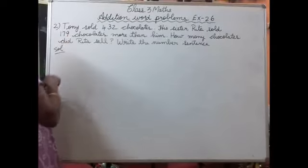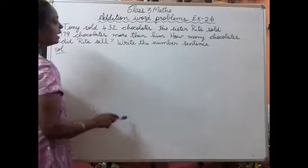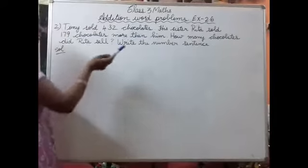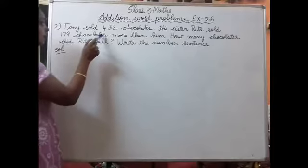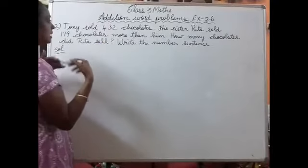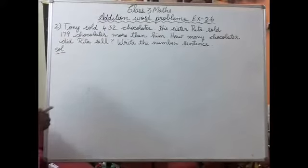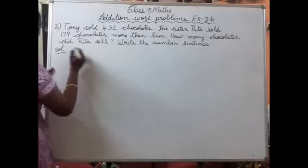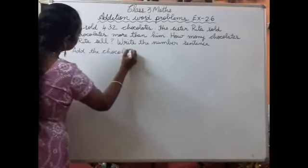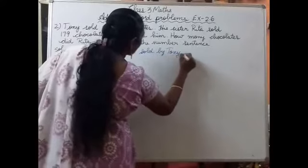Question number 2. Tony sold 432 chocolates. Tony ne 432 chocolates sell kiya hai. His sister Rita sold 179. So how many chocolates did Tony and Rita sell altogether? We have to find kitni chocolates Rita ne sell kiya hai. Write the number sentence - add the chocolates sold by Tony and Rita.